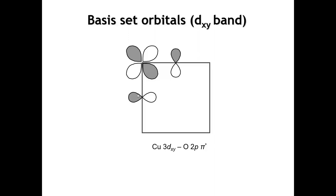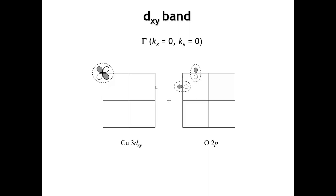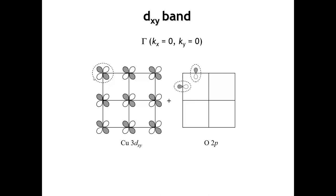The DXY band at higher energy represents the antibonding interaction between the DXY orbital and the oxygen 2p orbitals. The basis set is one copper and two oxygens — the contents of the unit cell. The next step is to take this basis and apply the e^(iKX) term at different K points to map out how the phases of the orbital change from one unit cell to the next. Starting at the gamma point, where KX and KY are both zero, I've separated the copper and oxygen orbitals on two different diagrams for clarity.